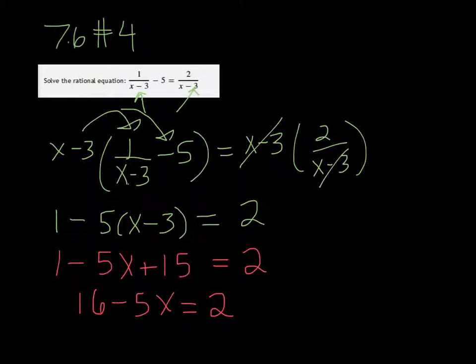Subtract 16 on both sides, and we get negative 5x equals negative 14. And then finally divide by negative 5, and you get 14 over 5.